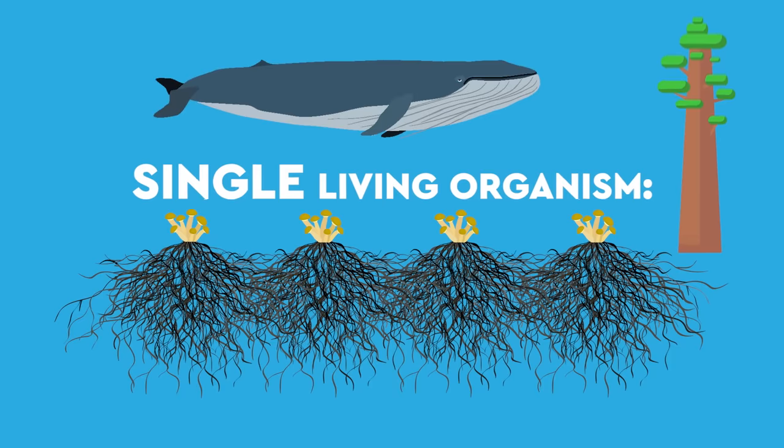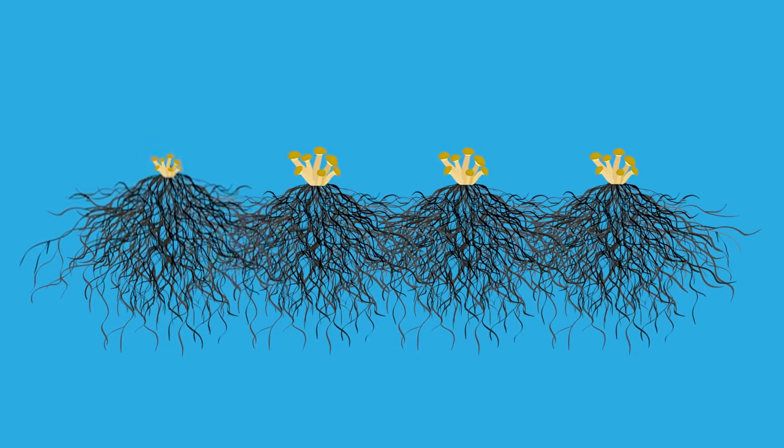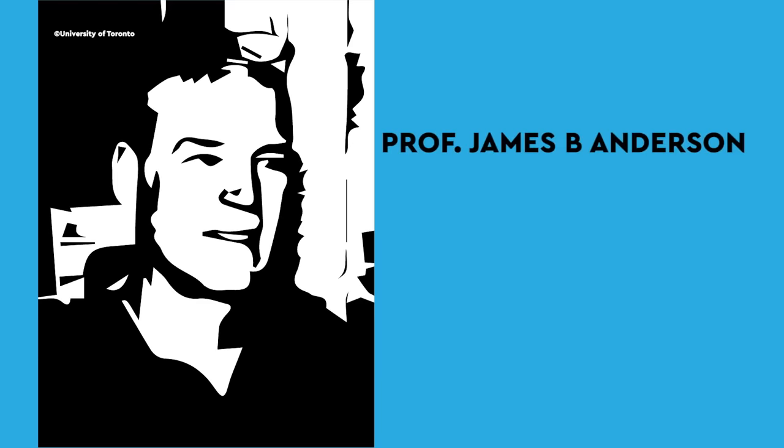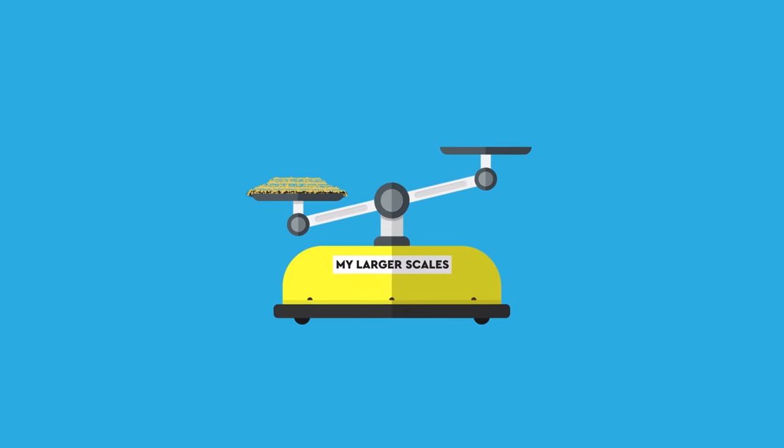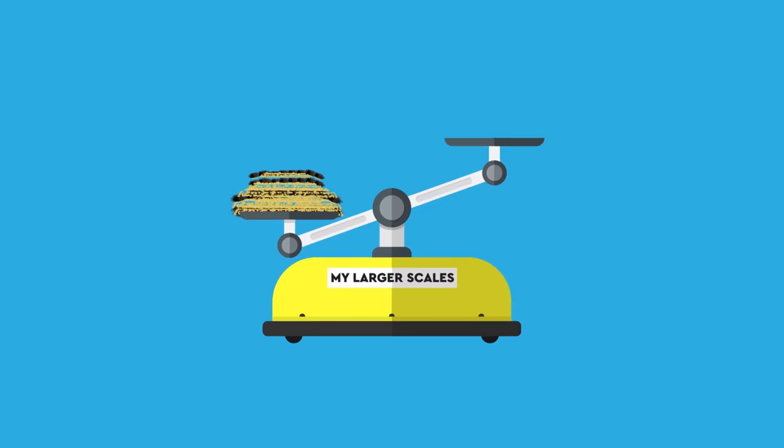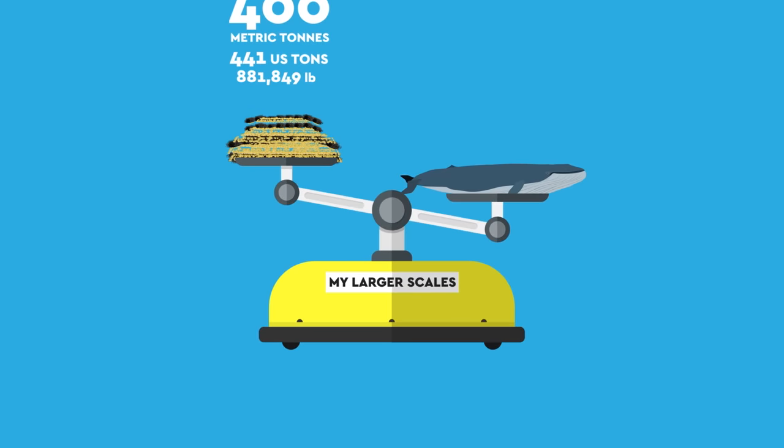And it's not just the extensive area it covers that makes the Armillaria ostoyae so huge. Its discoverer, James B. Anderson from the University of Toronto, recently surveyed the site and now estimates that if the entire fungus were dug up out of the ground and weighed, it would top the scales at 400 tons, more than double the heft of a blue whale.